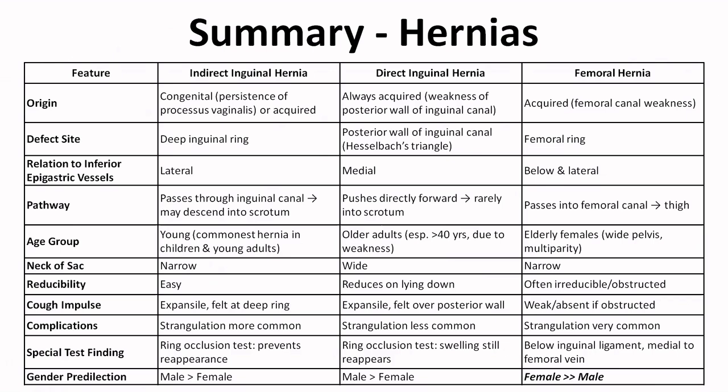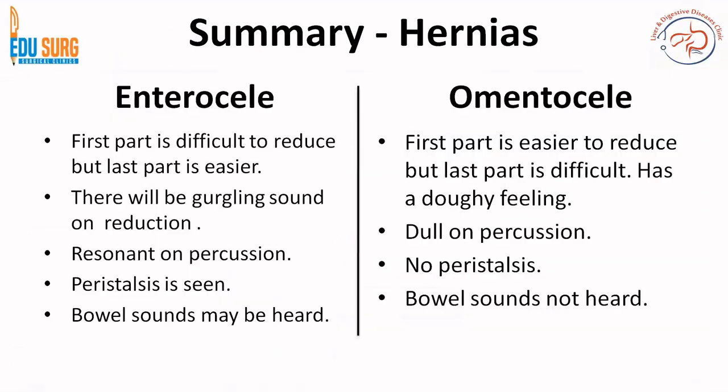Enterocele versus omentocele is a very commonly asked question. In enterocele, the first part is difficult to reduce but once some part of intestine enters the abdomen it is easier to reduce. There is a gurgling sound on reduction, it is resonant on percussion due to air in the intestine, peristalsis can be seen, and bowel sounds can be heard. In omentocele, the first part is easier to reduce whereas the last part is difficult, and the feel is doughy. It is dull on percussion.